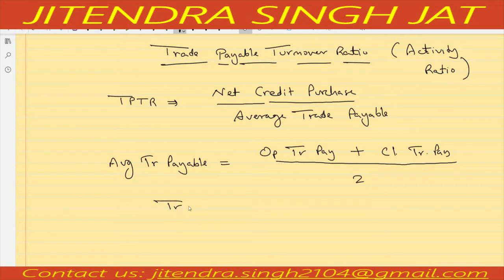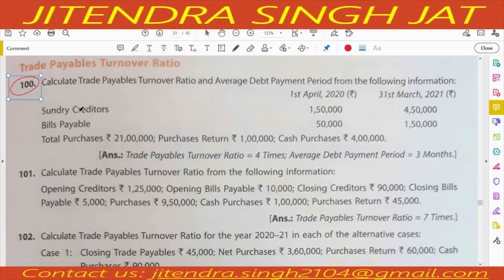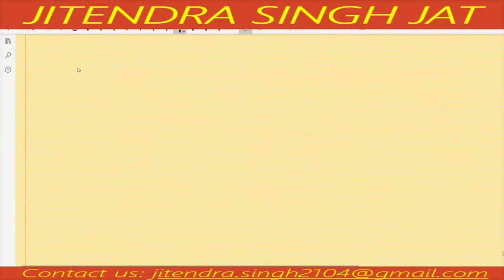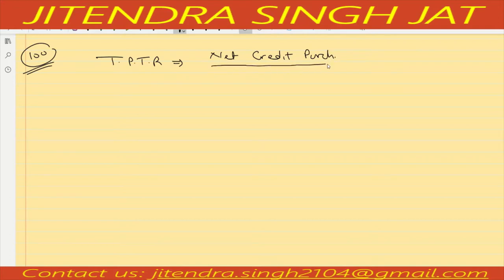Trade payable includes creditors and bills payable. Now we need to solve some numericals of trade payable turnover ratio. Let's begin with question number 100: calculate trade payable turnover ratio and average debt payment period from the following information. Trade payable turnover ratio means net credit purchase upon average trade payable.